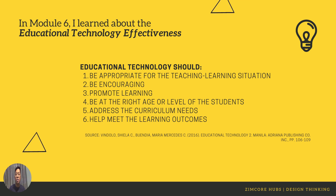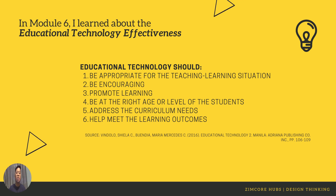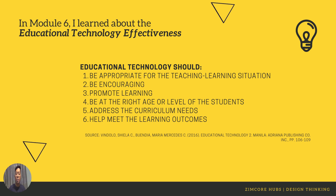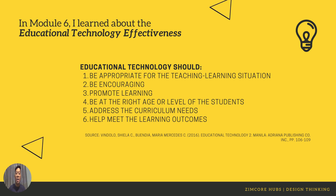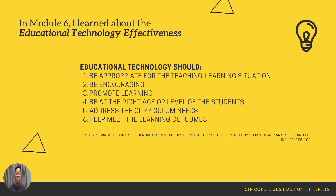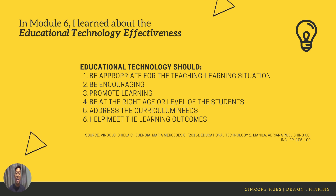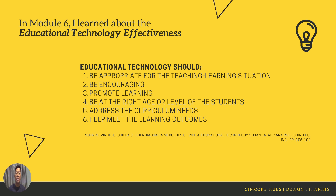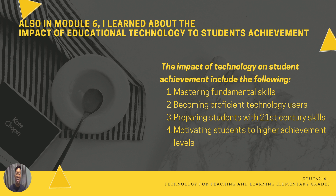In Module 6, I learned about educational technology effectiveness. Educational technology should be appropriate for the teaching-learning situation, be encouraging, promote learning, be at the right age or level of students, address the curriculum needs, and help meet the learning outcomes.